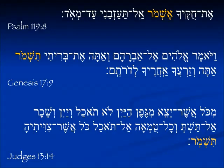Here are examples from scripture. In Psalm 119:8, 'Et hukecha eshmur' — the Aleph-Tav at the beginning tells us this is the object of the verb. The object is 'your statutes.' The verb is 'I will guard' — I will keep your statutes.